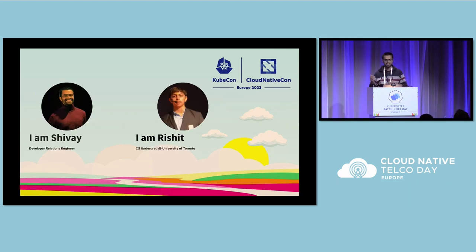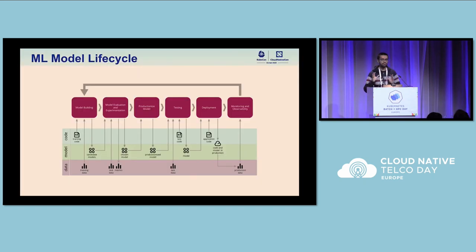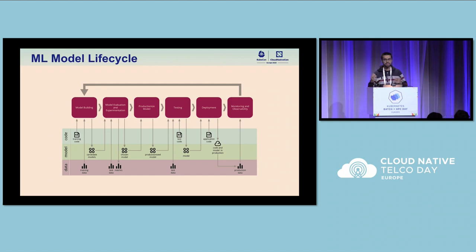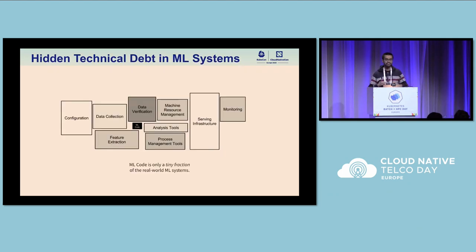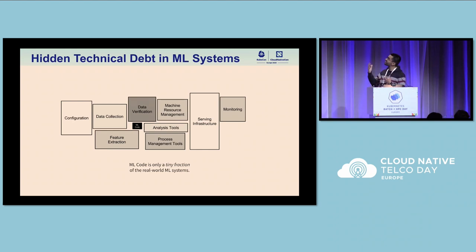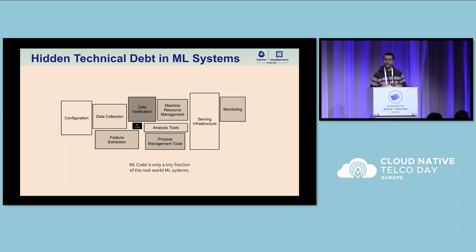I'm Shavai, a developer relations engineer at Millisearch, and Rishit, my co-speaker, is a CS undergrad at University of Toronto. When we talk about MLOps — bringing DevOps to machine learning workloads — we see that the ML code is a very small part of the overall architecture. The most important part is the serving infrastructure, because if you're running large deep learning models, you need a lot of compute power, and how efficiently you use it depends on how well-optimized your serving infrastructure is.